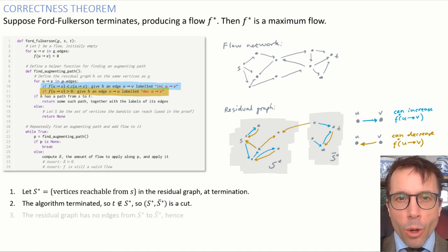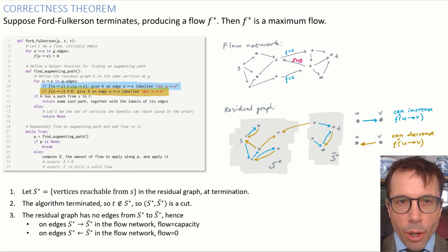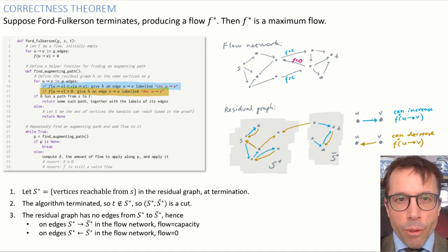Now, let's think about the flow on the edges between S star and S star bar. Let's suppose the original flow network has an edge from S star to S star bar. The residual graph can't have any edges from S star to S star bar. That's how we define the set S star bar, to be unreachable vertices, and therefore the flow on this edge is equal to capacity. What about flows from S star bar to S star? If there were any flow going from S star bar to S star, then the residual graph would have an edge in the opposite direction, but again, it can't. That would contradict the definition of S star, and therefore every flow from S star bar to S star is zero.